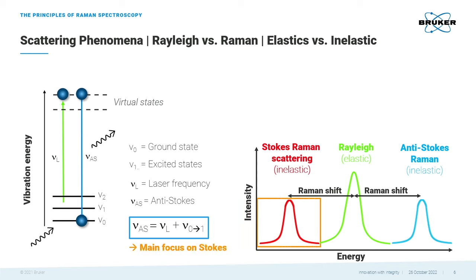The main focus in Raman spectroscopy, however, is typically on the Stokes scattered light. This is due to the fact that at room temperature, anti-Stokes scattering is less likely to happen compared to Stokes scattering.